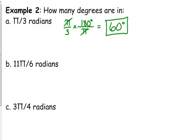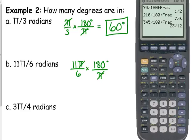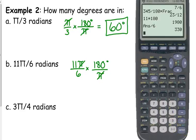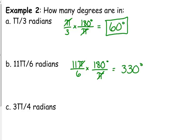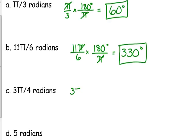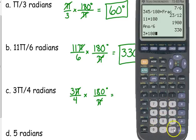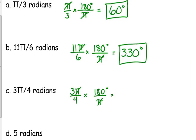11π over 6 radians. Multiplying it by 180 over π. The π's are going to cancel. So then we just multiply straight across the top and divide by the denominator. So we get 330 degrees. 3π over 4 radians. Same process. Multiplying it by 180 over π. 3 times 180 divided by 4. 135 degrees.